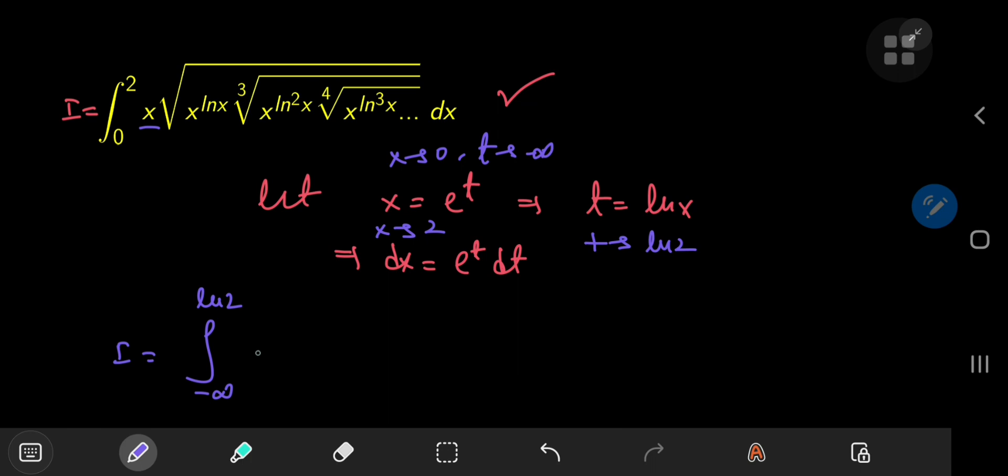So that means our integral transforms into the integral from negative infinity to the natural log of 2. This x term becomes an e to the t times a big square root. And we have x to the natural log of x. Now, x is e to the t. And the natural log of x is t itself. So we have e to the t to the t. So this can be written as e to the t squared.